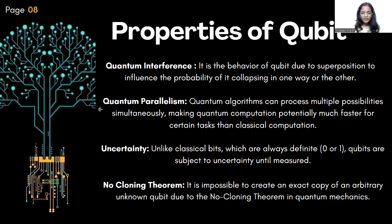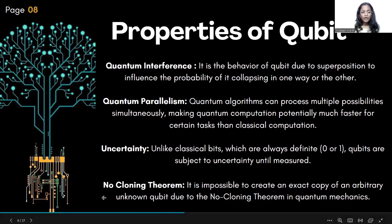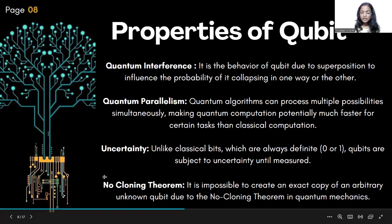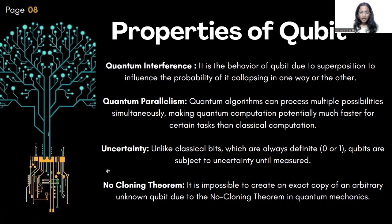Quantum parallelism: quantum algorithms can process multiple possibilities simultaneously, making quantum computation potentially much faster for certain tasks than classical computation. Uncertainty: unlike classical bits which are always a definite zero or one, qubits are subject to uncertainty until measured. No-cloning theorem: it is impossible to create an exact copy of an arbitrary unknown qubit due to the no-cloning theorem in quantum mechanics.